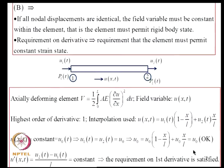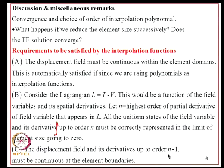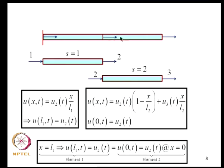Condition C requires that the displacement field and its derivatives up to order N-1 be continuous at element boundaries. For two elements with shared node U2, the first element gives U = U2·(X/L1) at X = L1, and the second element gives U = U2 at X = 0, so the field variable is continuous. Since N equals 1 here, we only need continuity of the field variable itself, and this is satisfied.